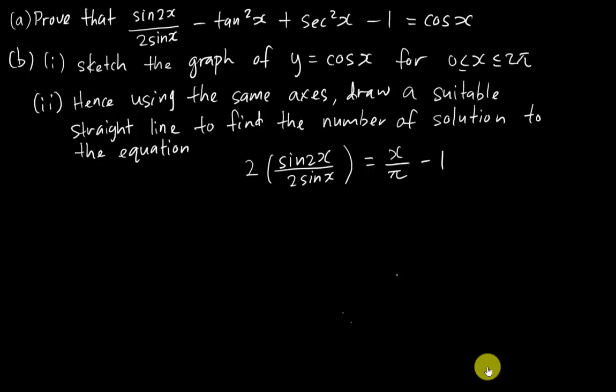Alright, so first the question asks you to prove that sin2x over 2sinx minus tan²x plus sec²x minus 1 will equal to cosx. This equation seems very hard, but in fact it is very easy if you know the formulas.